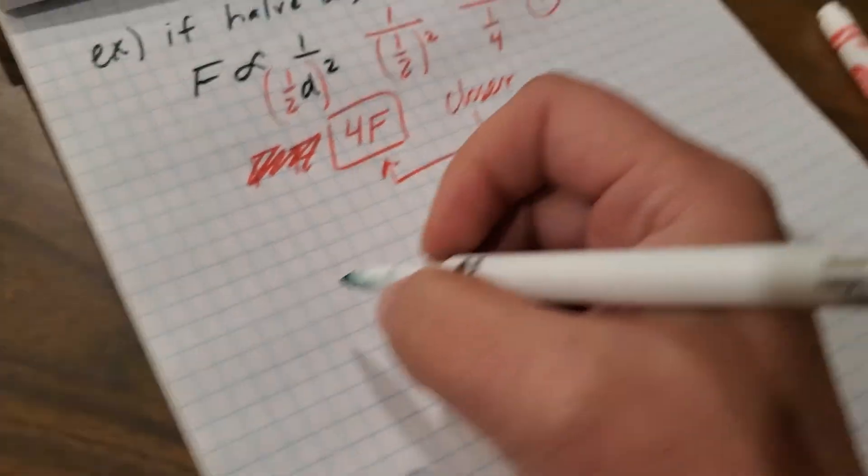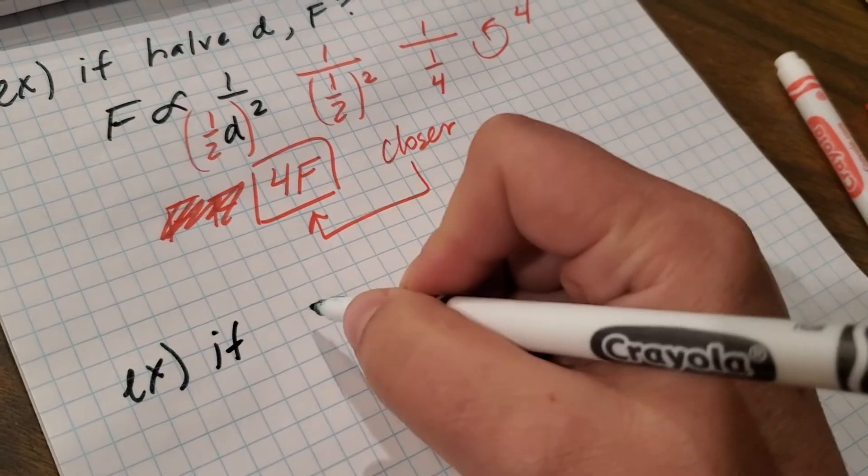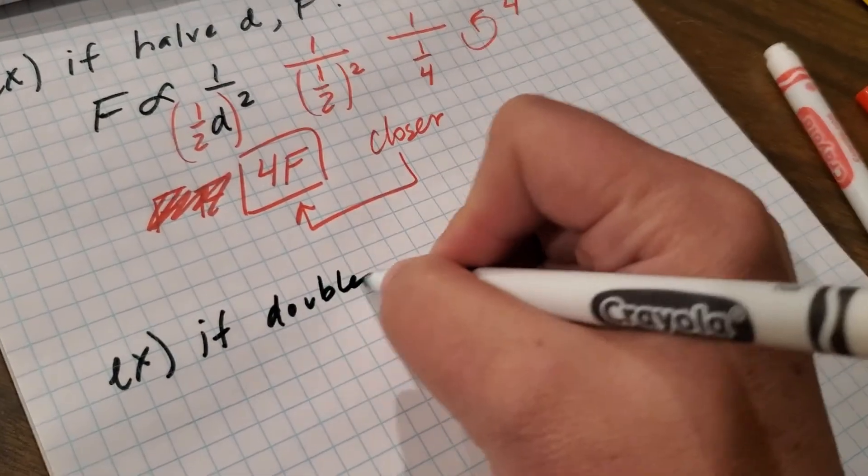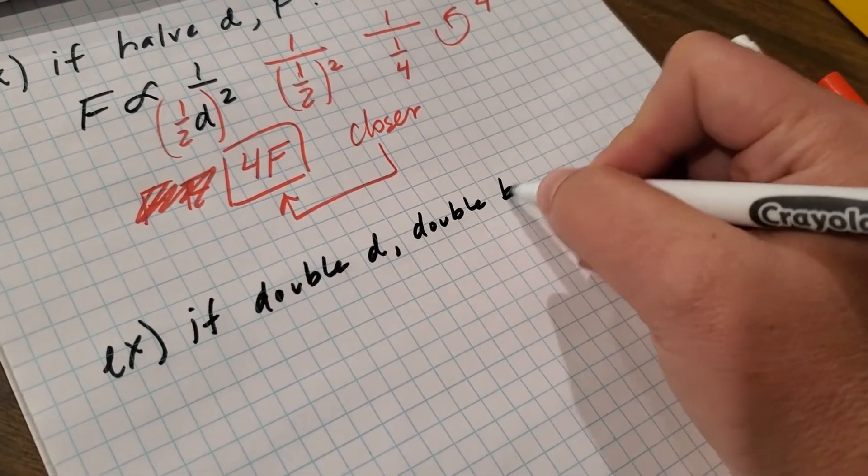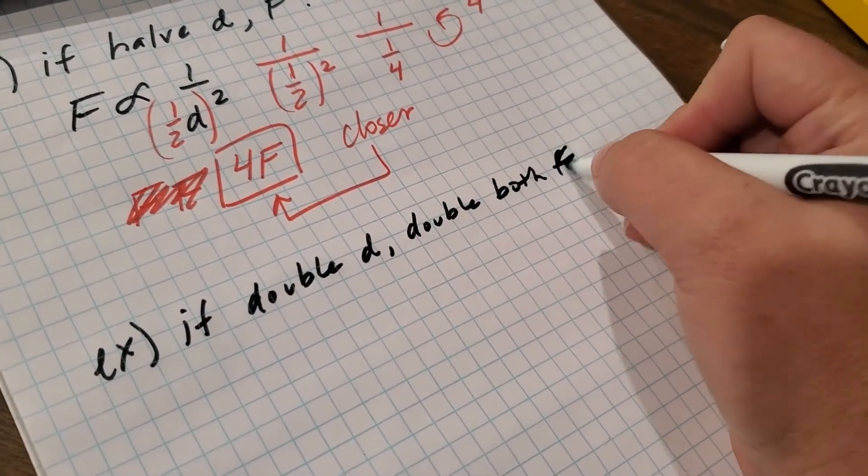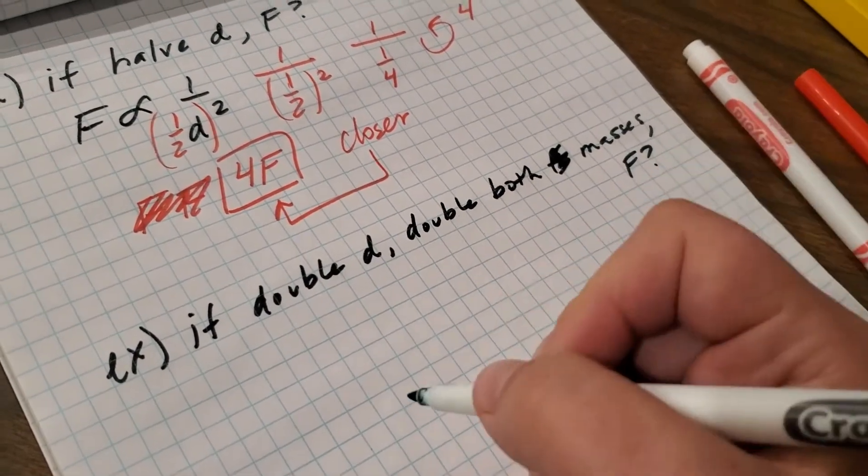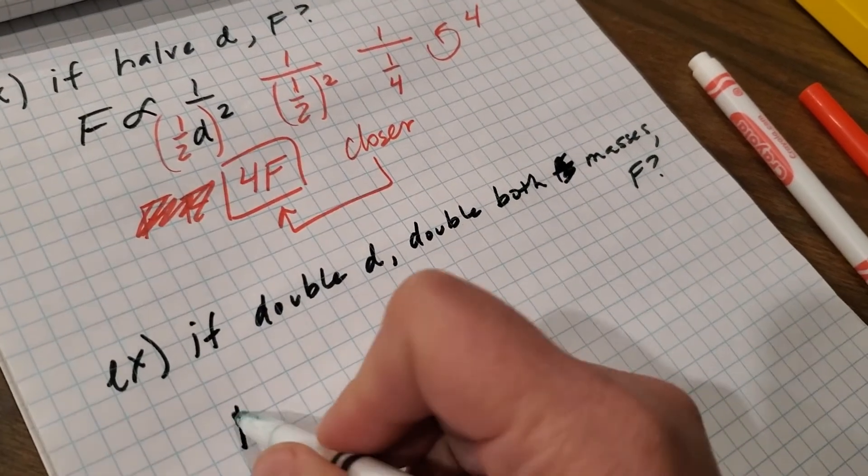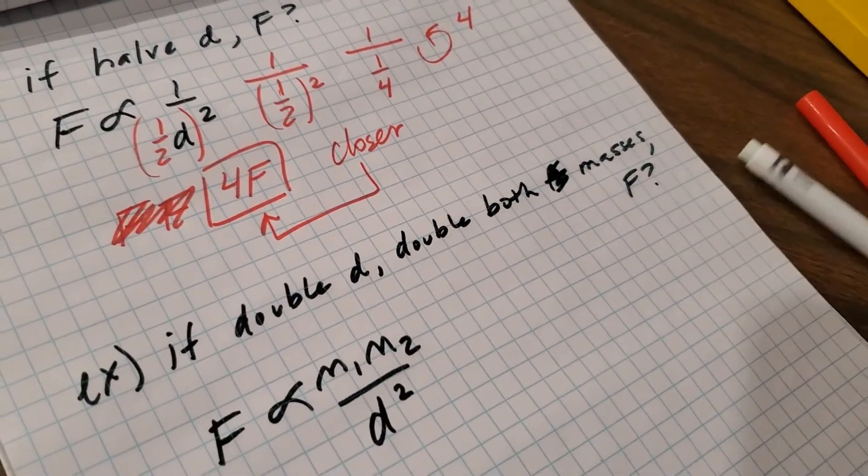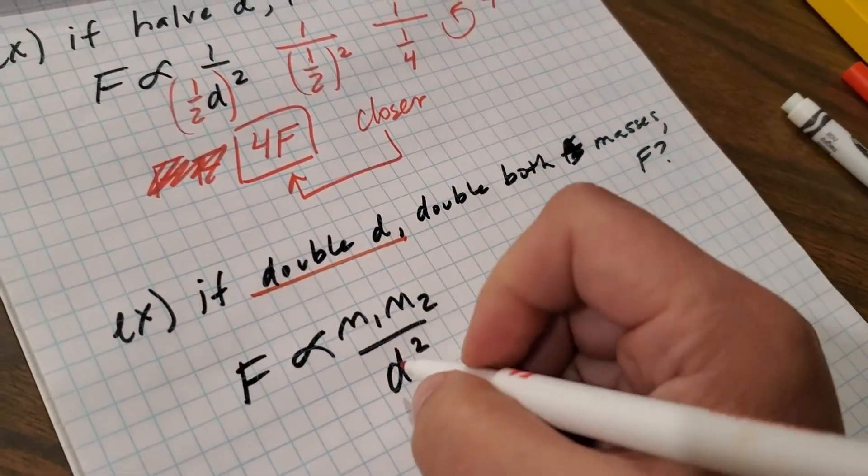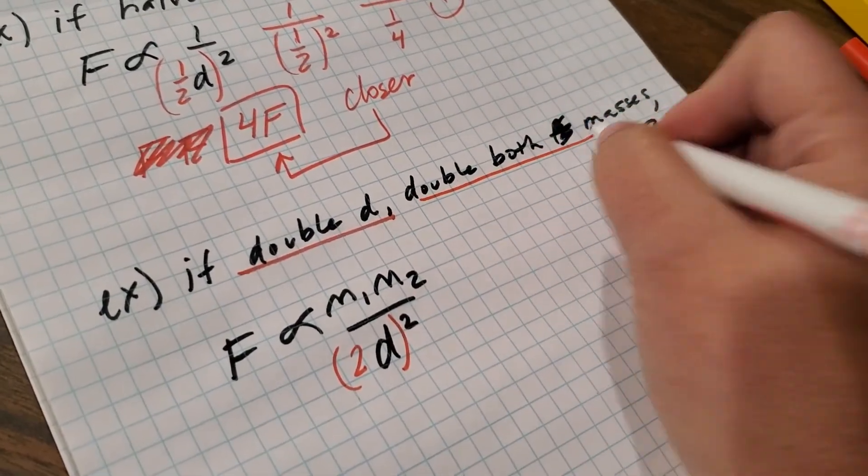Say you double the distance and double both masses. What happens to the force? Okay. Well, in this case, I'm going to use a proportion that includes everything. M1, M2 over D squared. Now do what it says to do. Double the distance and the parentheses. Double both masses.